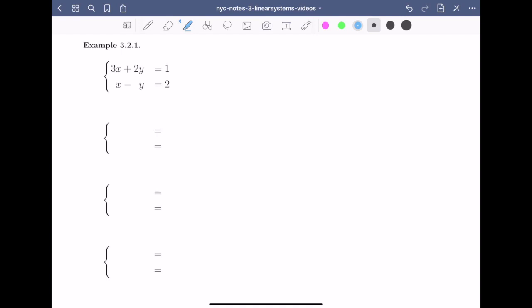In the previous video, we looked at the following linear system. We had two equations in two variables. The first equation was 3x plus 2y equals 1, and the second equation was x minus y equals 2. We solved this linear system and found that a single point, x equals 1 and y equals minus 1, satisfies both equations.